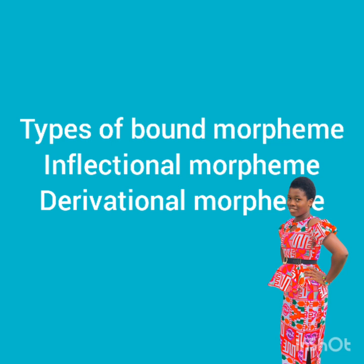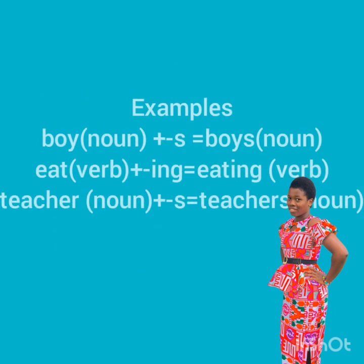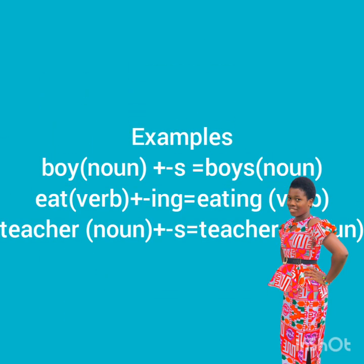Inflectional morphemes are morphemes added to a base but do not change the word class. For example, 'boy' — when you add '-s' it becomes 'boys,' but 'boys' is still a noun, just as 'boy' is a noun. Also, 'eat' — when you add '-ing' it becomes 'eating,' which is still a verb.